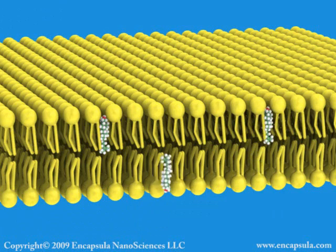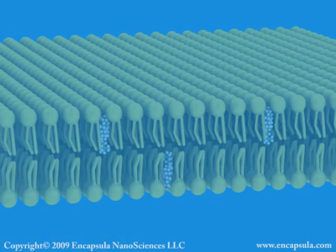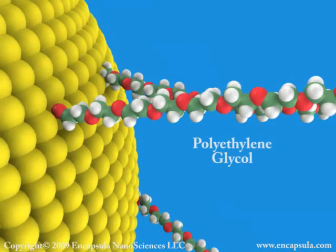Incorporating tocopherols into the membrane can increase the chemical stability of unsaturated phospholipids. Liposomes can have various molecules attached to their surface.